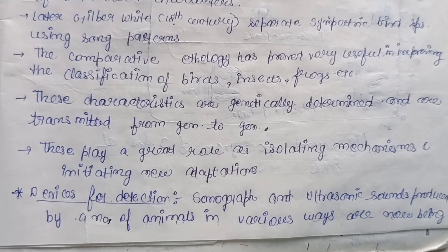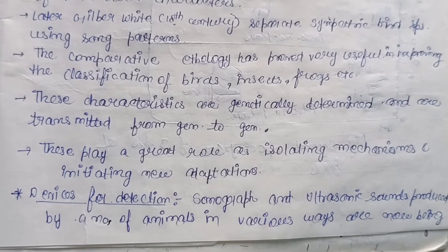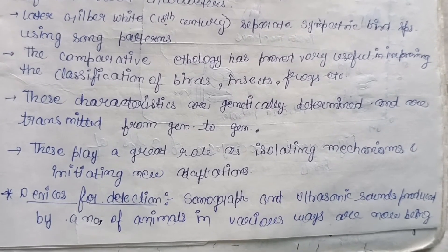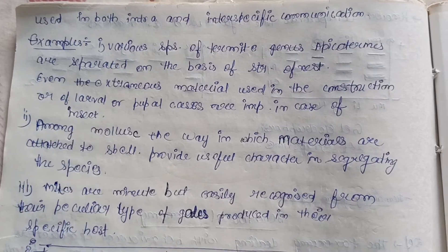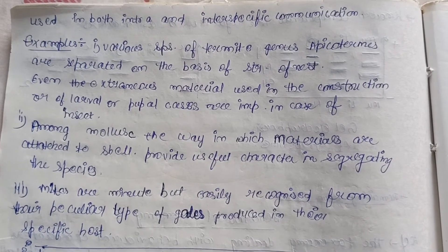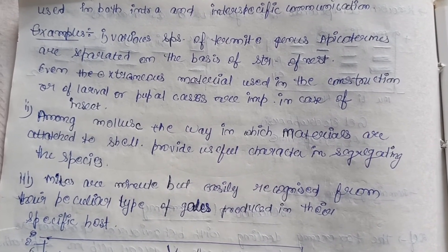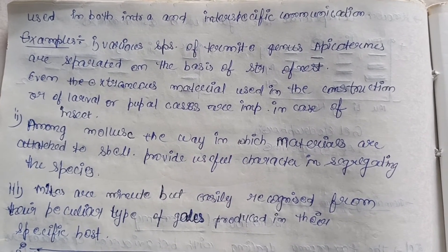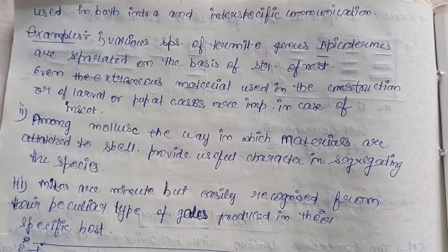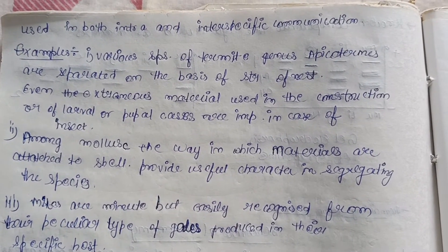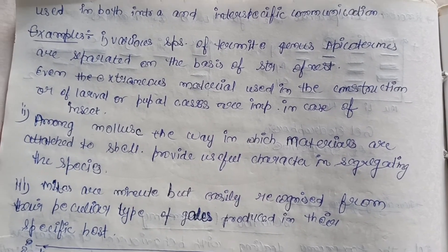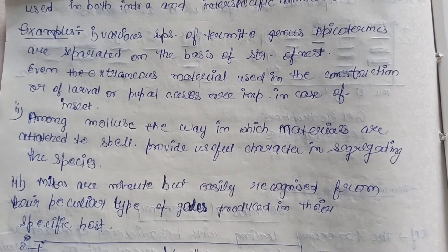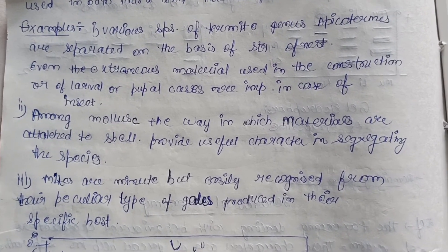Devices for detection: sonographs and ultrasonic sounds produced by animals are now being used in both inter-specific and intra-specific communication. Inter-specific communication is communication between different species, for example prey-to-predator communication. Intra-specific communication involves the emission of species-specific signals by one member to another of the same species.